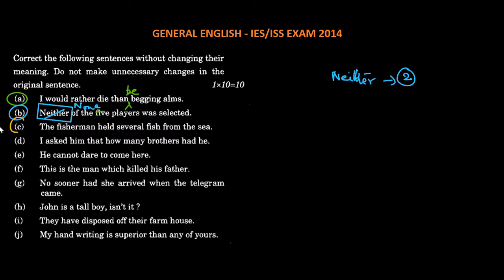Next, the fisherman held several fish from the sea. Now fishermen, they don't hold fishes, they catch. The fisherman caught several fish, not fish. Several means many, so it will be plural. So it will be fishes. So the fisherman caught several fishes from the sea.